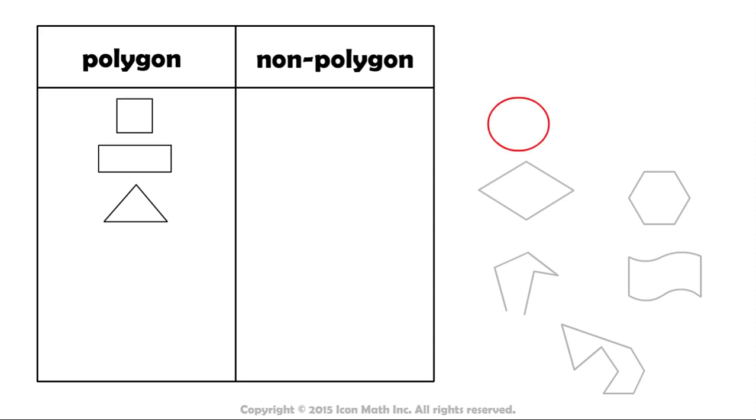What about a circle? Is it a polygon? Well, it is a closed shape. But, is it made of line segments? As you can see, it is not. It has curves. Therefore, circles are not polygons.